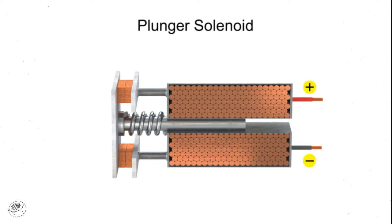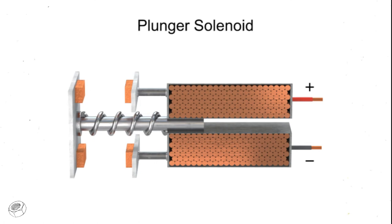When the current is turned off, the magnetic force is removed and the tension in the spring forces the rod back out to its original resting position.